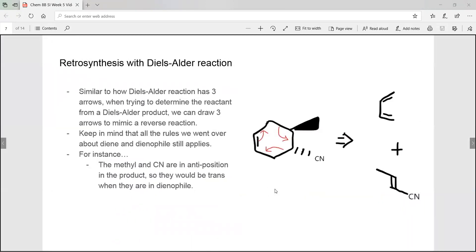Okay, so retrosynthesis with Diels-Alder reaction. So we can draw theory arrows like these, like how we did for Diels-Alder reaction to kind of mimic a reverse reaction. Keep in mind that all the rules we went over still apply. So the methyl and cyanide are in anti-position of the product, but they would be trans when they're in a dienophile form.